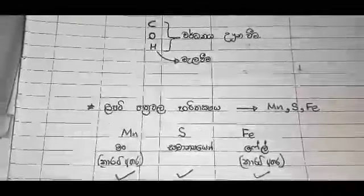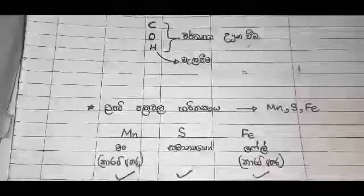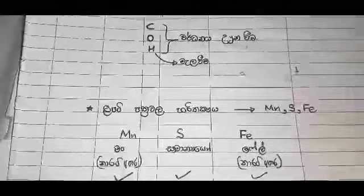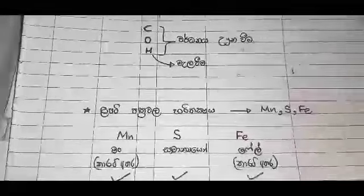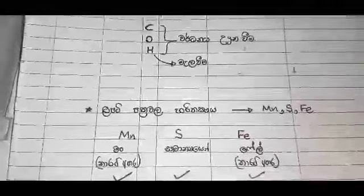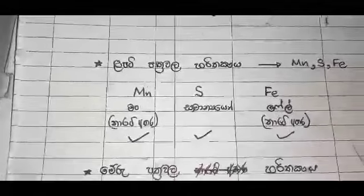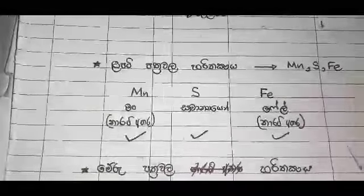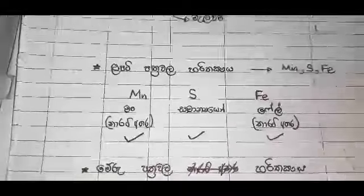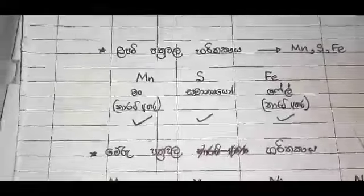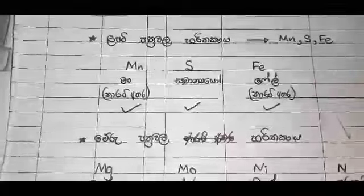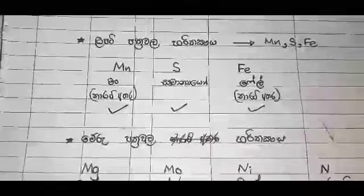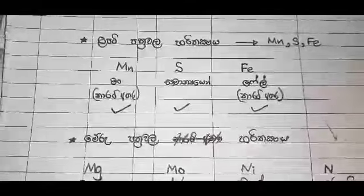If you are using this, you can use the same thing as a single magnet. You can use this one, but you can use the same thing as a single magnet. It's called magnesium, molybdenum, nickel, nitrogen.